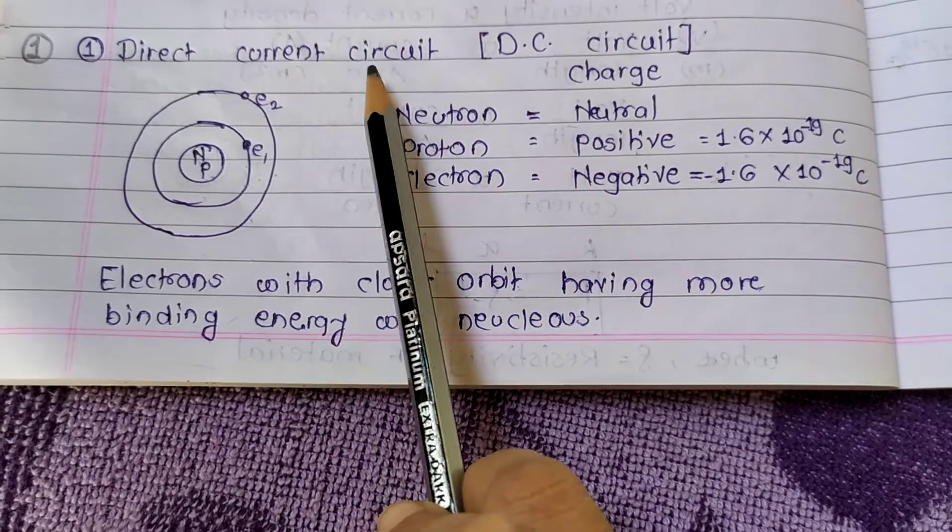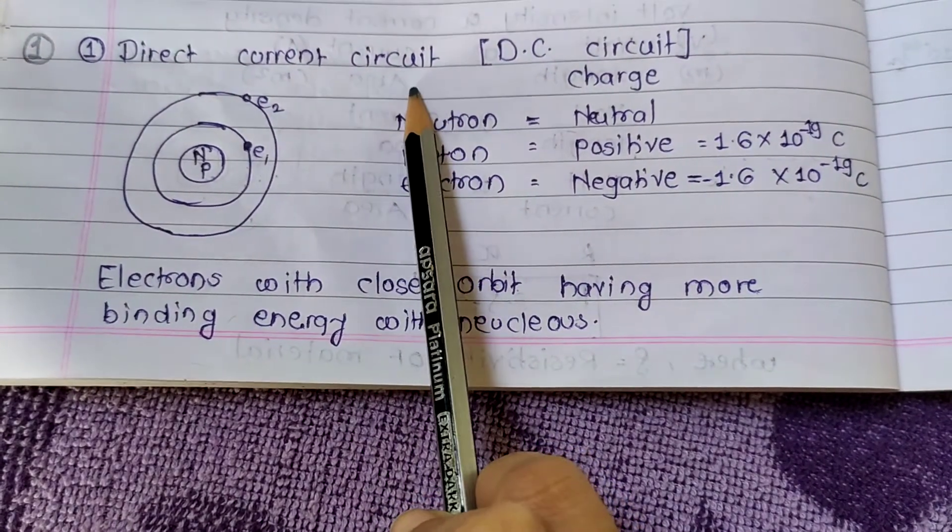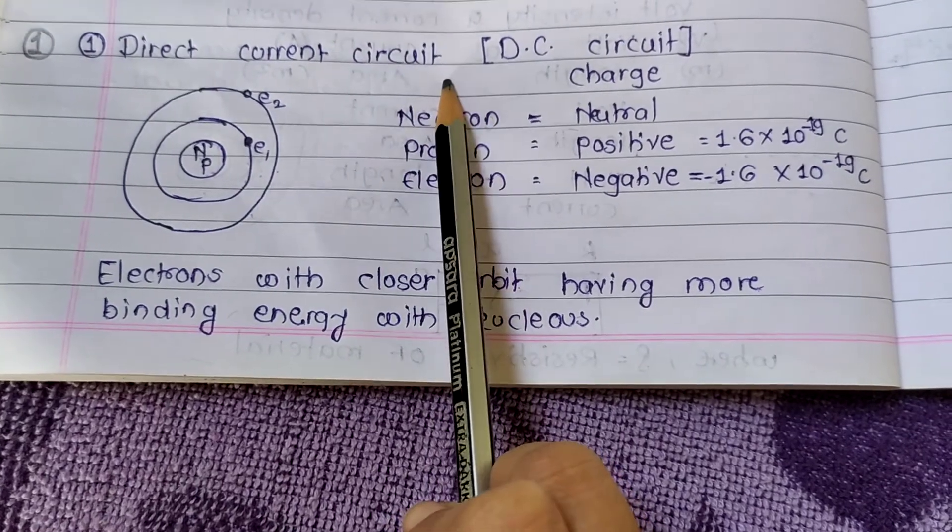Two types of current: direct current and alternating current. Direct current flows only in one direction and alternating current switches directions rapidly.